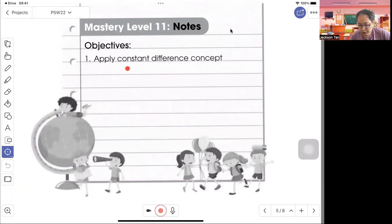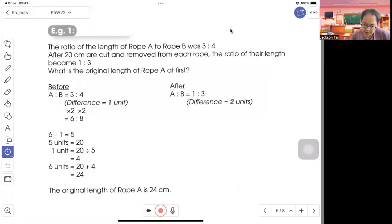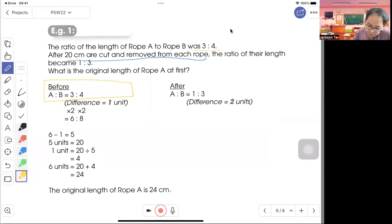Mastery Level 11, apply constant difference concept. The ratio of the length of rope A to rope B was 3 to 4. So we get the ratio first. After 20 cm are cut and removed from each rope, the ratio will become 1 to 3.